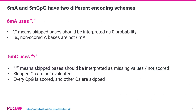It is also important to note the different encoding schemes for 6mA and 5mC. 6mA calls are encoded with the period, which means the skipped bases are interpreted as zero probability, whereas the 5mC calls are encoded with a question mark, which means the skipped bases are missing or have unknown modification status.